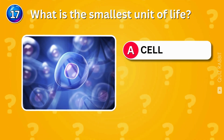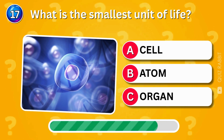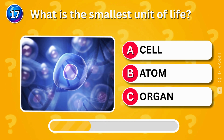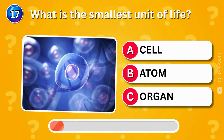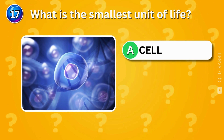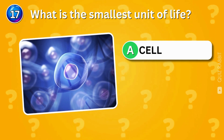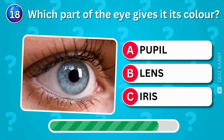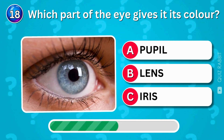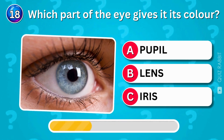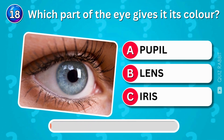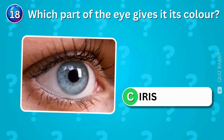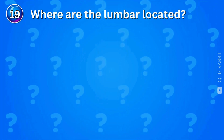What is the smallest unit of life? The cell — life begins here. Which part of the eye gives it its color? The iris gives eyes their color — blue, brown, green, what's yours? Where is the lumbar located? The lumbar is in the lower back, the foundation of your posture.